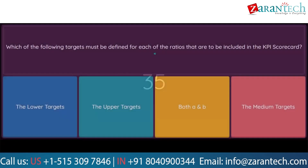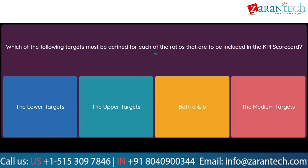Question: Which of the following targets must be defined for each of the ratios that are to be included in the KPI scorecard? Option 1: The lower targets. Option 2: The upper targets. Option 3: Both A and B. Option 4: The medium targets.